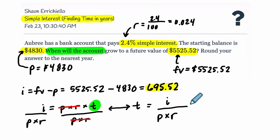So now we just plug in the numbers that we have. The interest is 695.52. That is 695.52 over the product of the principal times the rate. So 4,830, right? Our principal is right here, P, 4,830 times our rate, which is 0.024. Okay, so our time equals that. Let's calculate it.